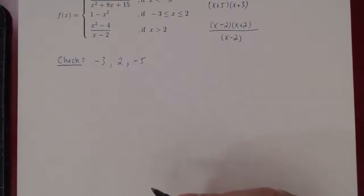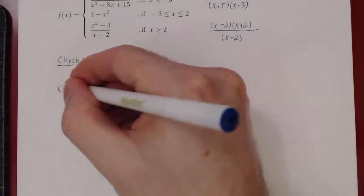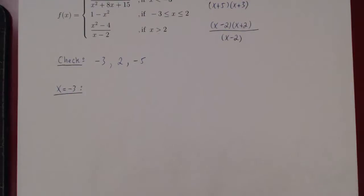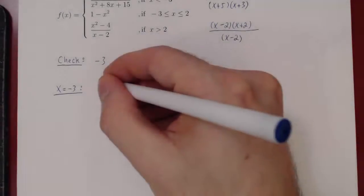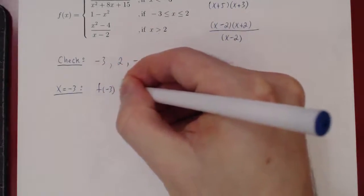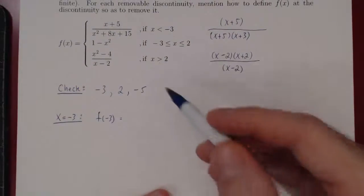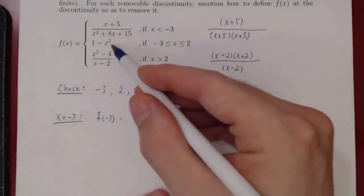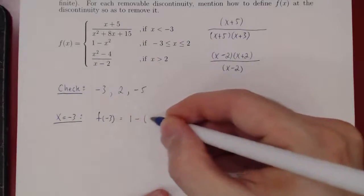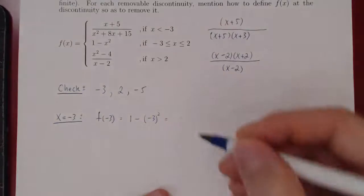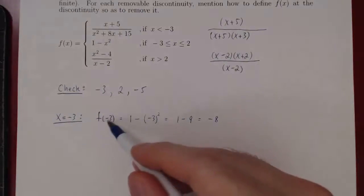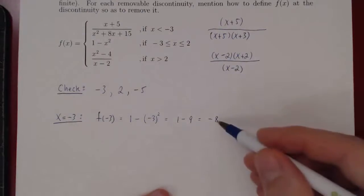Let's start with x equals negative 3. We always look at the value of the function at the point of interest, and then the limit of the function at that same point. What's the value of f when x is negative 3? Since x is greater than or equal to negative 3, f of x is 1 minus x squared, so we get 1 minus negative 3 squared, which is 1 minus 9, giving us negative 8. The value of the function exists at x equals negative 3, and the value is negative 8.